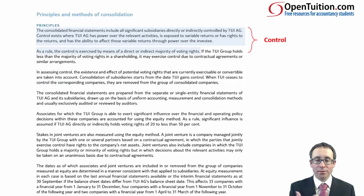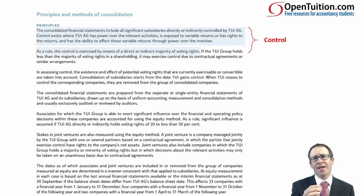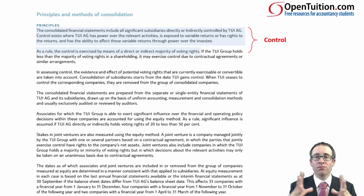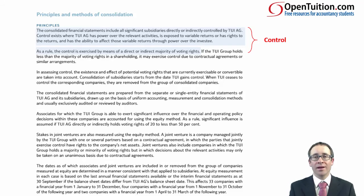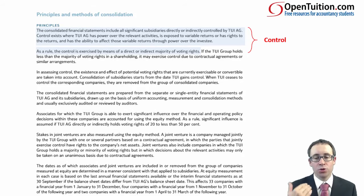The next paragraph says: as a rule, control is exercised by means of a direct or indirect majority of voting rights. Remember, it's not just 50% of the equity share capital — technically it's 50% of the voting rights, so we can pass an ordinary resolution. If we can pass an ordinary resolution, we can appoint the directors, tell them what to do, and therefore we have the power to direct.